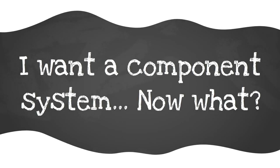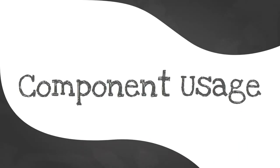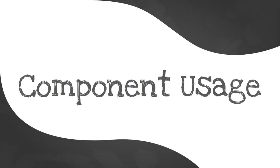Moving on: that all sounds great, but now what? There are two real big choices: component usage and component architecture. For component usage, there are really four approaches: coupled, decoupled, headless, and monolithic. This is a high-level view of how you're going to build things in Drupal and create standards and best practices for your component system.